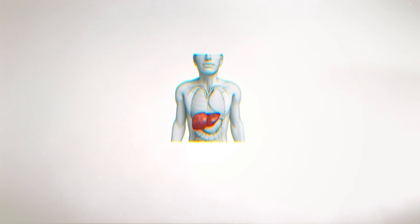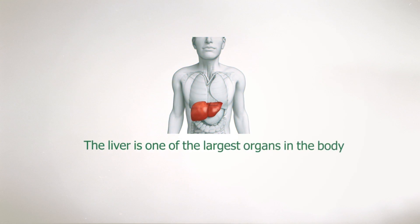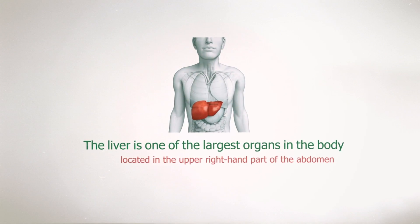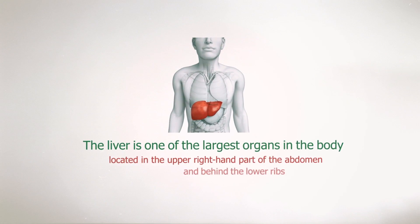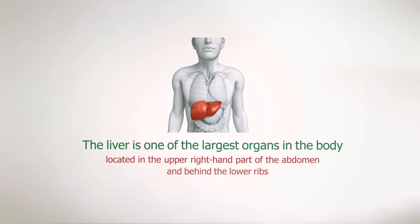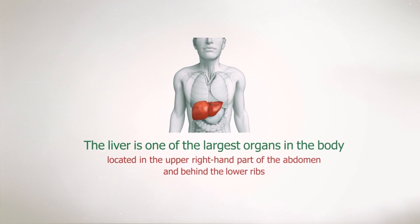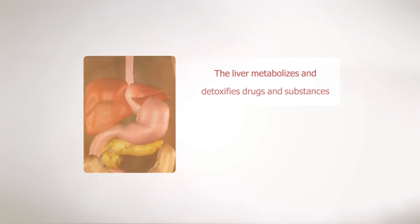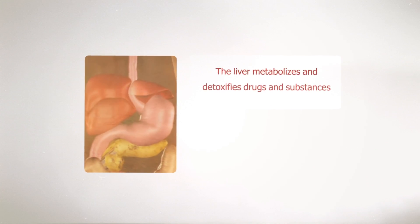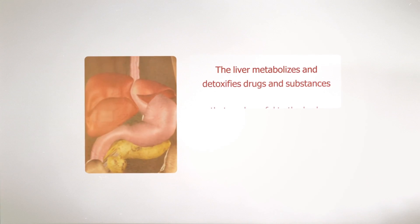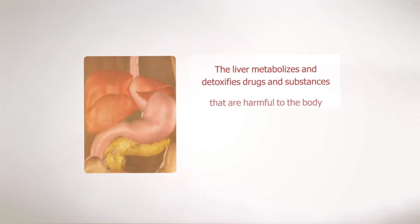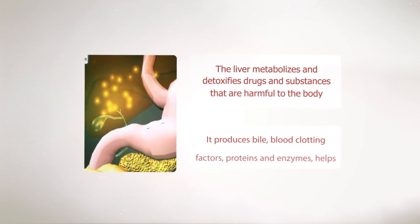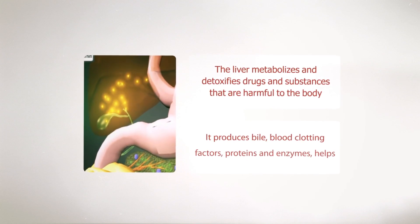The liver is one of the largest organs in the body, located in the upper right-hand part of the abdomen and behind the lower ribs. The liver metabolizes and detoxifies drugs and substances that are harmful to the body. It produces bile and blood clotting factors.